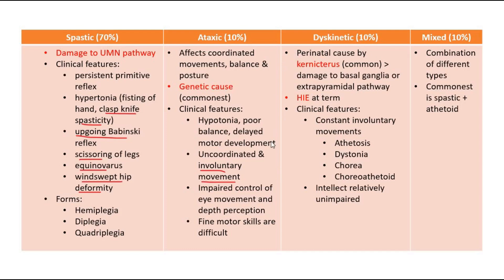The third type is the dyskinetic type, caused most commonly by kernicterus, which damages the basal ganglia or extrapyramidal pathway, or by hypoxic ischemic encephalopathy at term. Clinical features include constant involuntary movements such as athetosis (repetitive, involuntary, slow writhing movements of the arms, legs, or hands), dystonia (impairment of muscular tone), chorea (irregular jerky or shaky movements), and choreoathetosis (combination of chorea and athetosis with twisting and curving movement). Usually, their intellectual ability is unimpaired.